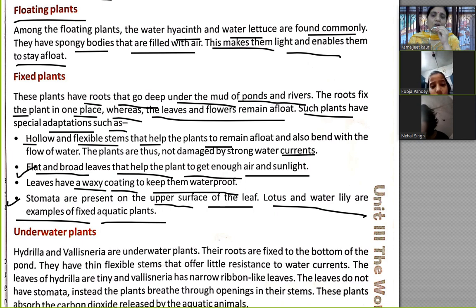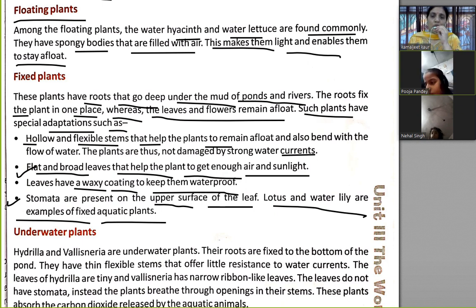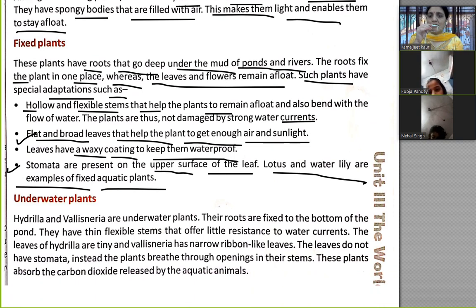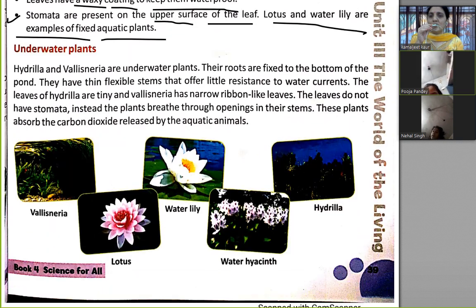Stomata are present on the upper surface of the leaves. The leaves have a waxy coating to keep them waterproof, and the shape of the leaves is flat and broad.